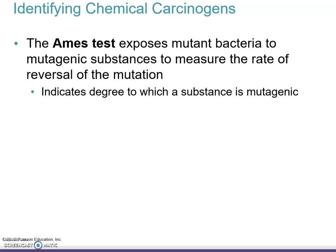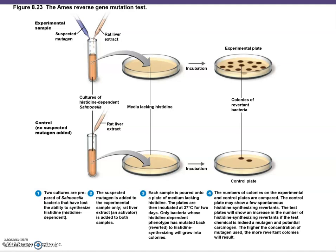There's also something called the Ames test for identifying chemical carcinogens. Basically the Ames test exposes mutant bacteria — bacteria that are already mutated — to a mutagenic substance to see the rate of reversal of that mutation. Here's a diagram that shows that: you're taking mutant bacteria and exposing them to another mutagen to see how many bacteria will revert to a natural state or some other state.